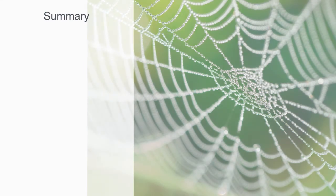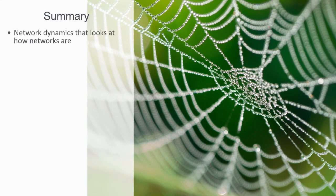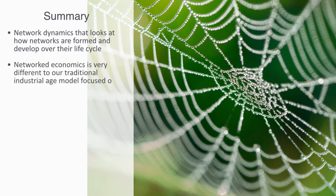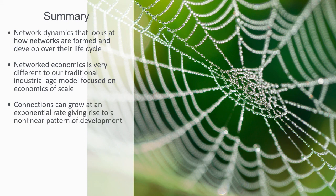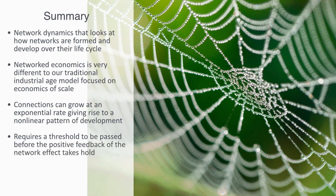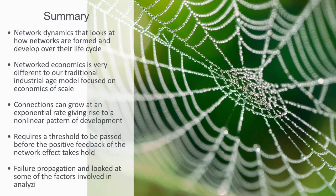In summary, we've been talking about network dynamics that looks at how networks are formed and develop over their life cycle. We firstly noted that the formation of economic markets and institutions that are networked is very different in nature to our traditional industrial age model that is focused on economics of scale — the mass production of products focused on the average mean user in the market. In contrast, we talked about how connections can grow at an exponential rate, giving rise to a non-linear pattern of development that requires a certain threshold to be overcome before the positive feedback loop of the network effect takes hold, from where the system can grow very rapidly. We talked about how this can lead to negative externalities of crowding out and a lock-in effect due to convergence. Finally, we touched upon the subject of failure propagation and looked at some of the factors involved in analyzing a network's resilience.